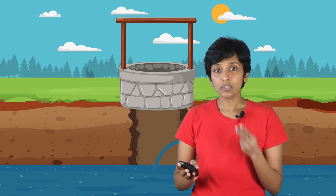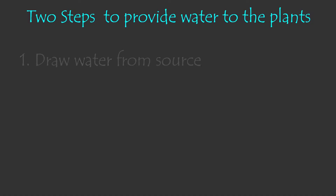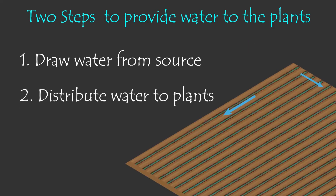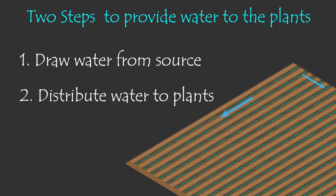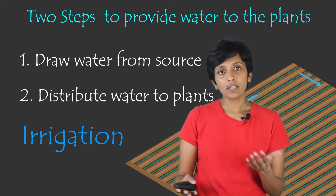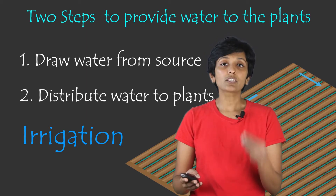Now in all of these cases, there are two steps involved to provide water to the plants. The first step is to collect or draw water from the water source. Once that is done, the second step is to evenly distribute this water to all the plants in the farm. The process of providing water to the plants by following these two steps is called irrigation. In this video, let's look at a few methods that farmers use to achieve these two steps.